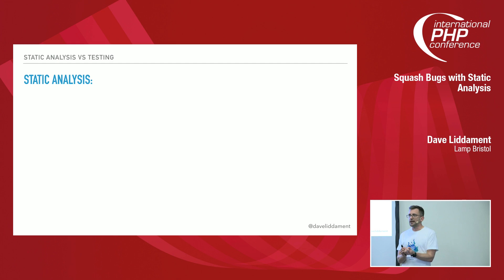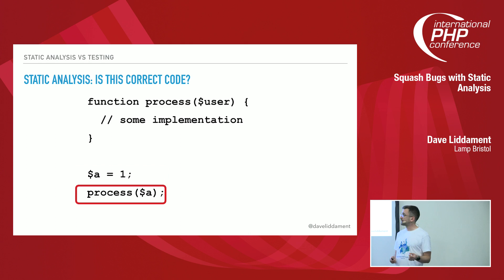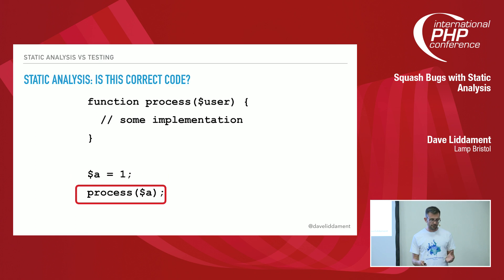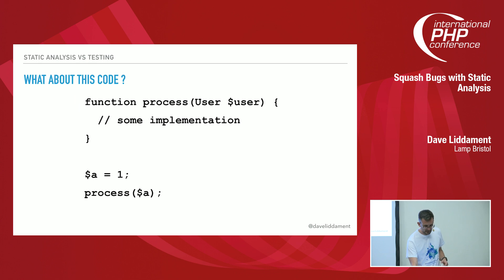Static analysis is looking at the code and reasoning as to whether it is correct, or whether there's potentially an issue with it. So we're all going to do some static analysis now. Is this code correct with all the available information we have? We're assigning A an integer value of 1, then calling process and passing A to it. We can see process takes something called user, but we have no more information about that. So with all available information, this is probably valid — we'd have to look inside process to decide otherwise.